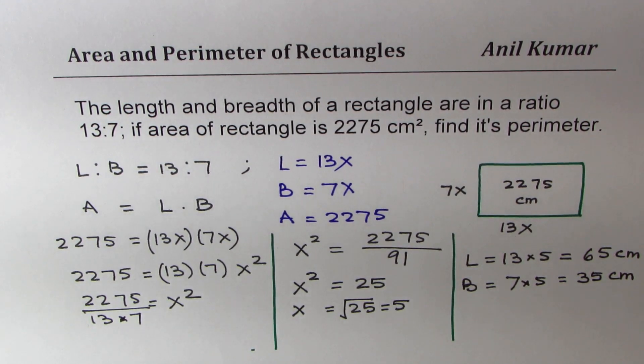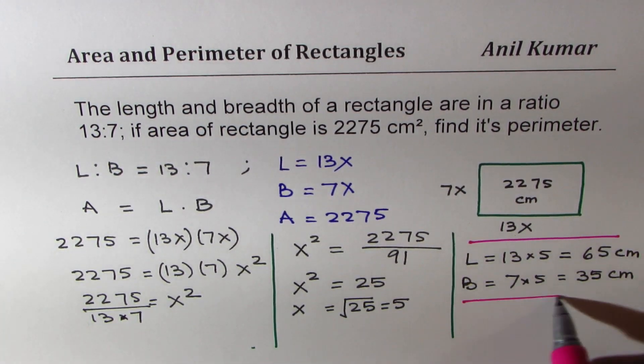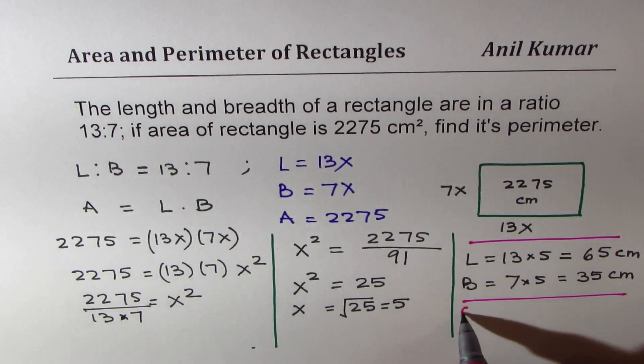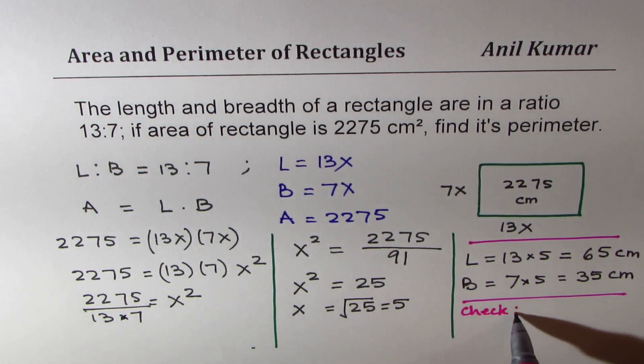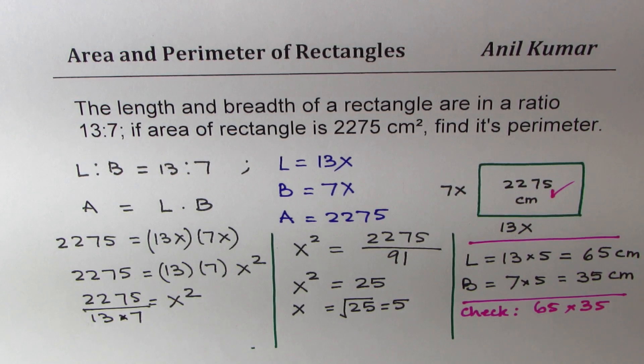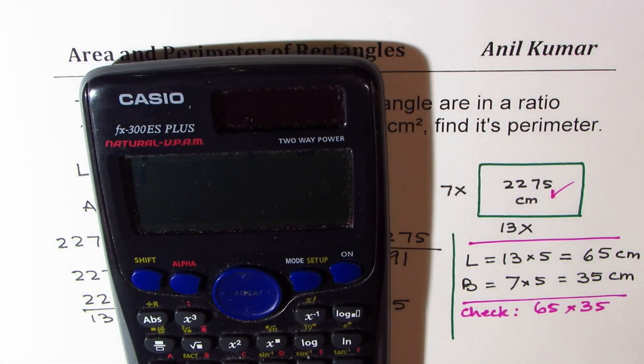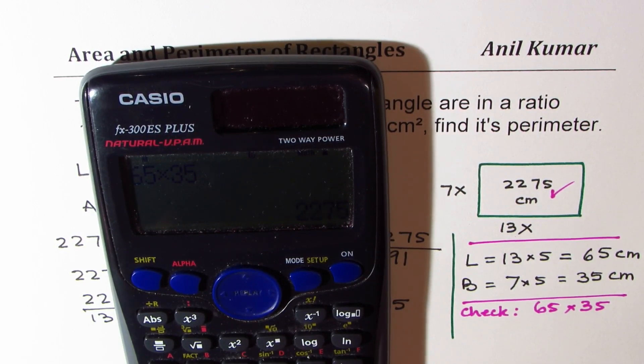So that becomes the solution for the given question. Now it's a good idea to check. If you multiply 65 with 35, do you get this? That is what check is. So there is no harm doing it. We have 65 times 35 and we do get 2275.